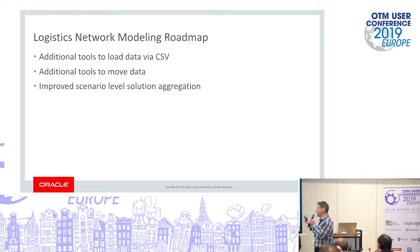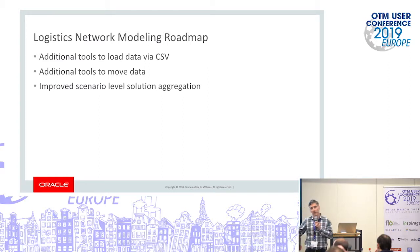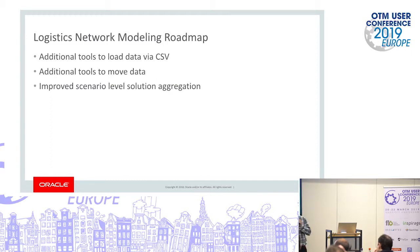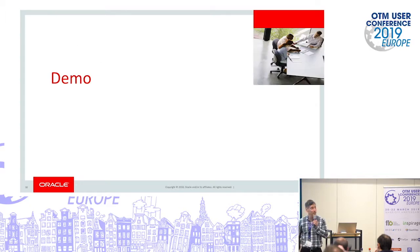We haven't released it yet but we've already started thinking about what needs to be added. One item is additional tools to CSV-load data into the tool — right now it relies on data already loaded into OTM, like orders and order movements. The goal would be to load data in a much simpler fashion without having to XML-in orders, locations, and so on. Other improvements include better data movement tools and improved scenario aggregation.